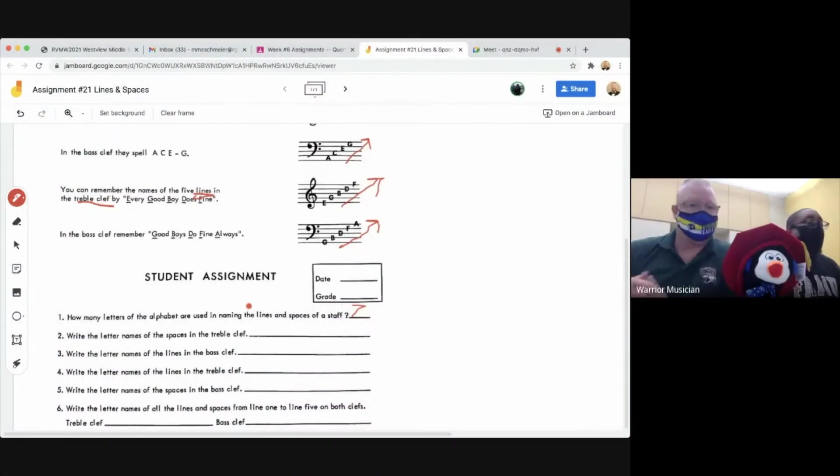So now we're just going to read through these questions, guys. This is what you're going to be answering today. And we're going to put emphasis on certain words. Write the letter names of each space in the treble clef. So spaces and treble clef, those are the two key words. That's what you're looking for to answer number two, the spaces for the treble clef.